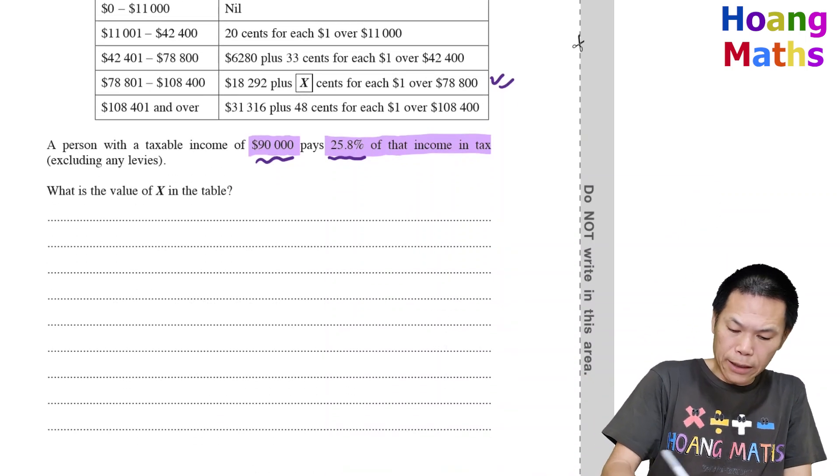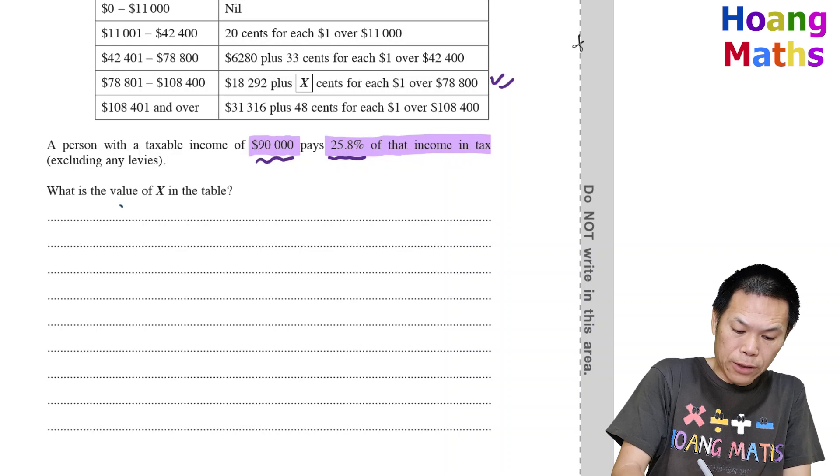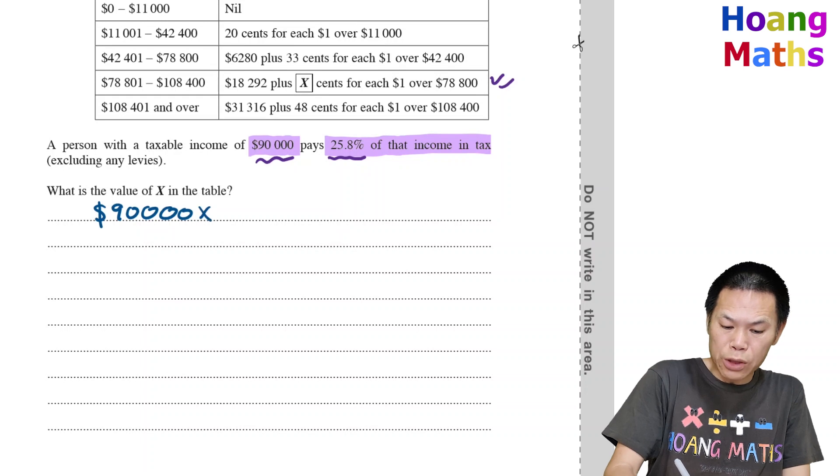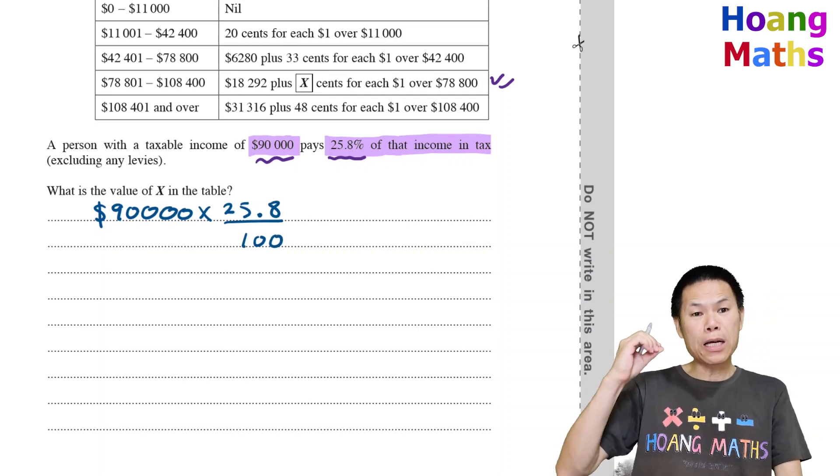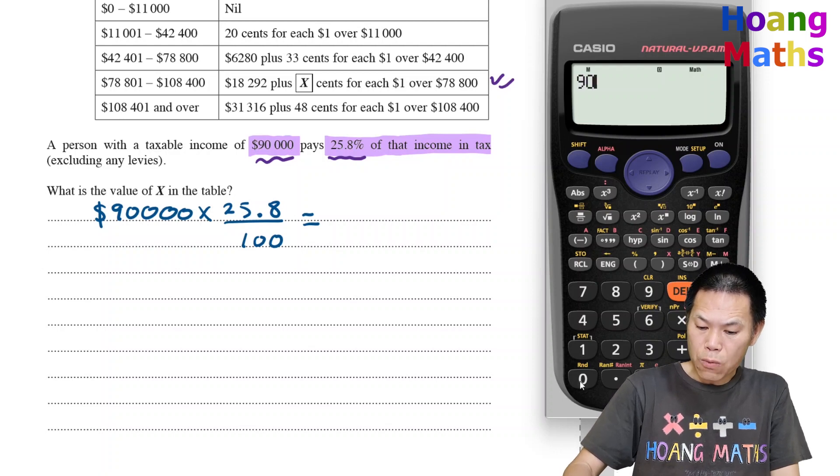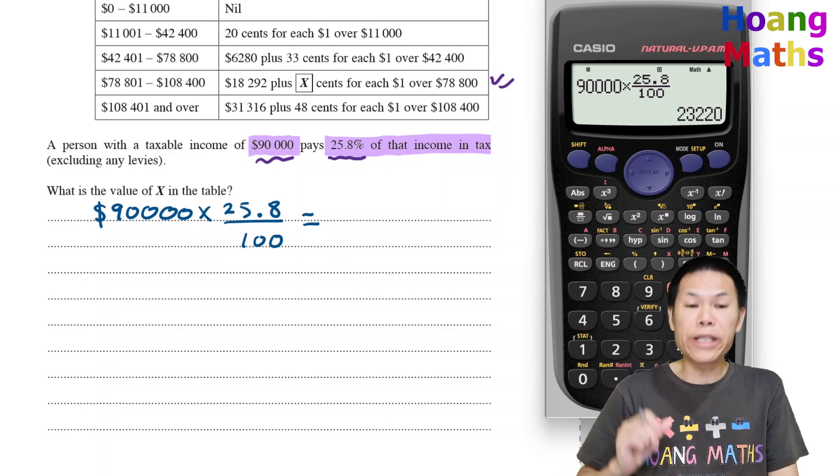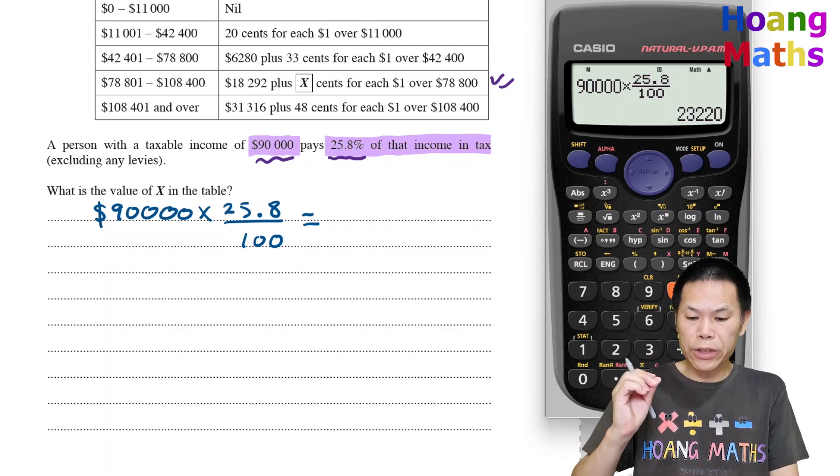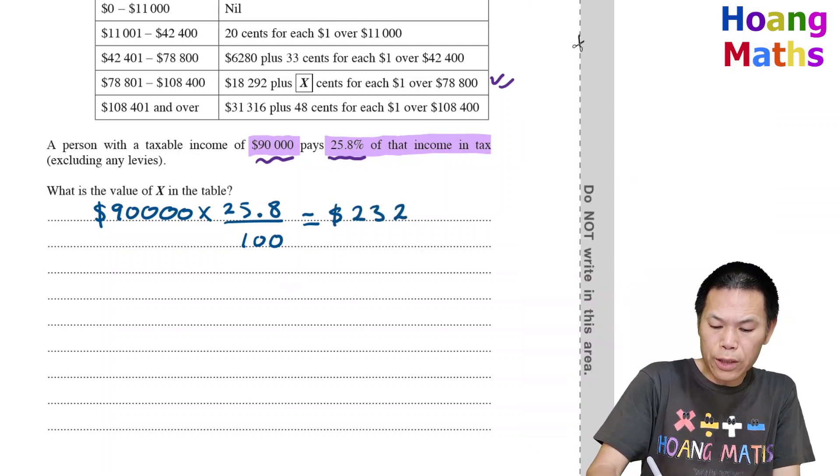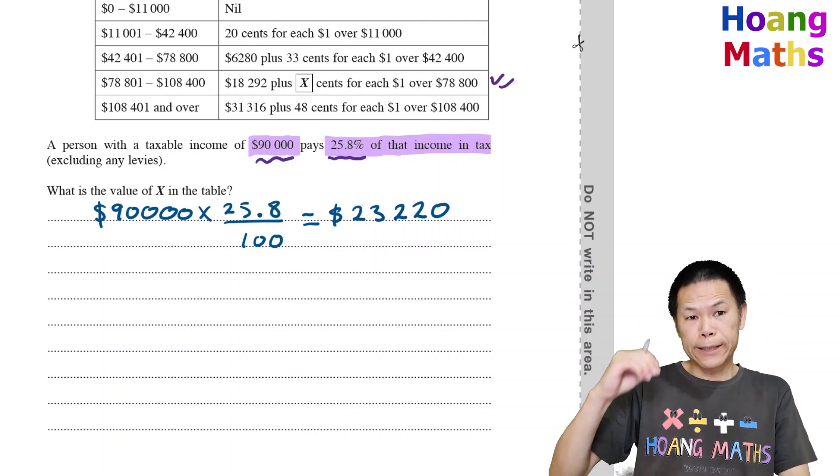Tax equals $90,000 times 25.8%. Percent means per 100. So 90, one, two, three times 25.8 over 100. That gives $23,220. So $23,220, that is tax payable.